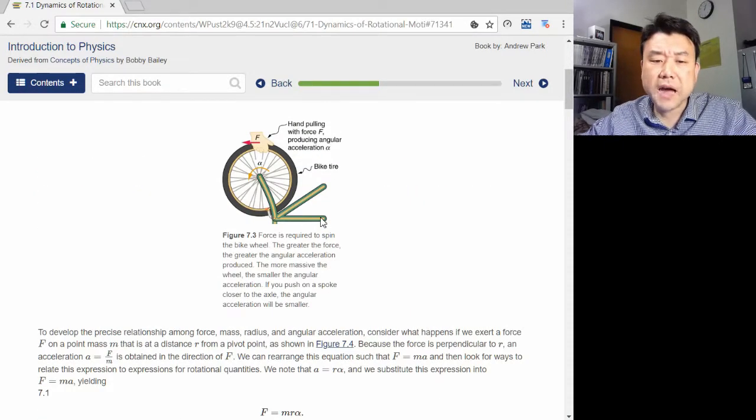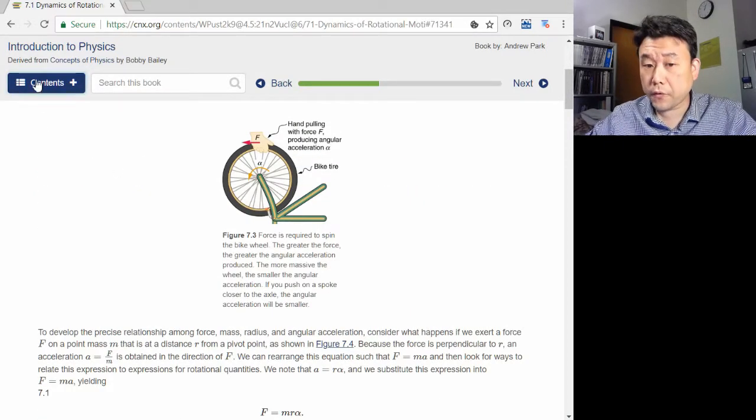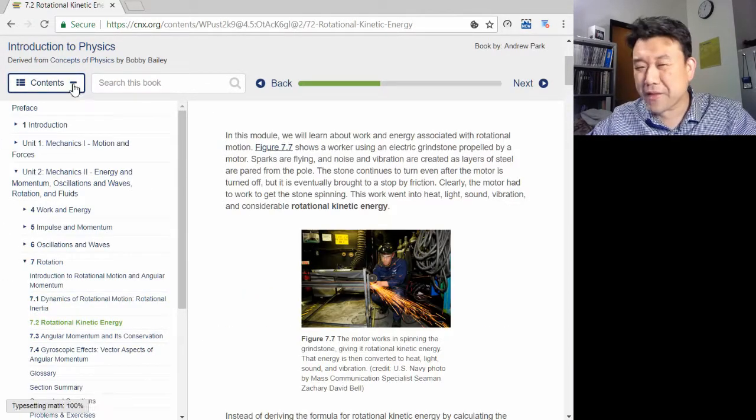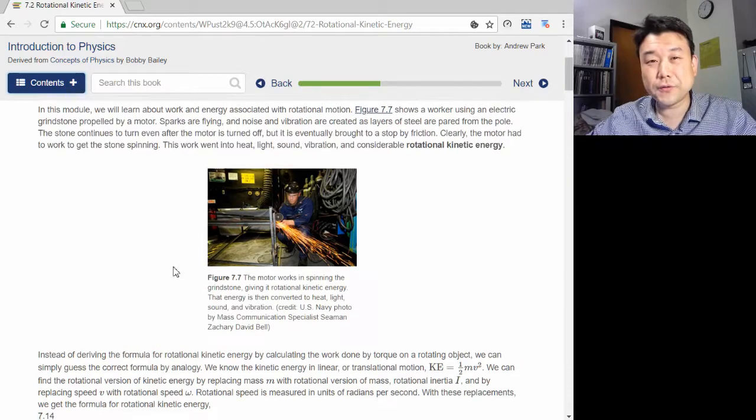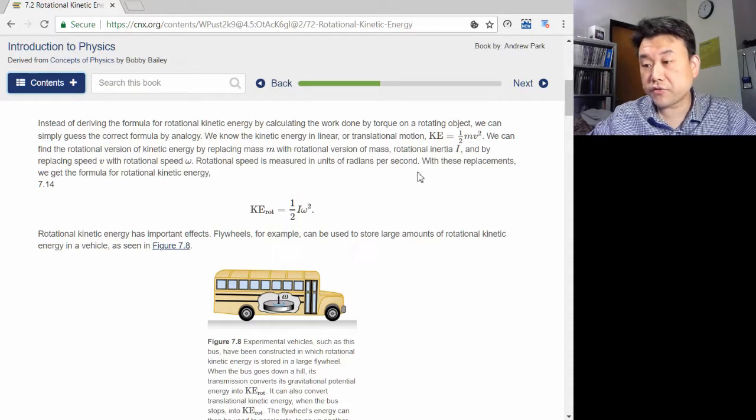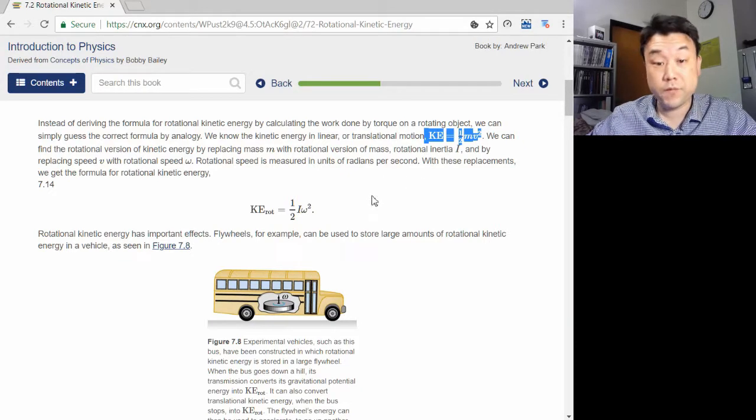This analogy is in full force for kinetic energy, where we don't bother deriving an expression for rotational kinetic energy. Instead, we guess at it from knowing that translational kinetic energy is one-half mv squared. So we use the rotational version of one-half,